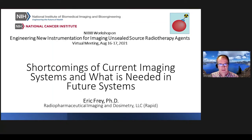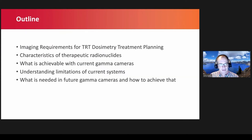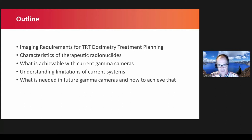I'd like to thank the organizers for inviting me to talk today. I have a couple of disclosures but I'm not going to take time to talk about that. This is an outline of what I'm going to talk about: imaging requirements for targeted radionuclide therapy, characteristics of the therapeutic radionuclides that make that challenging, what we can achieve with current gamma cameras, the sources of limitations for current systems, and what's needed for future gamma cameras.